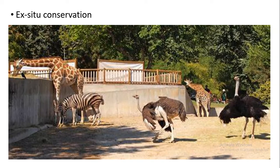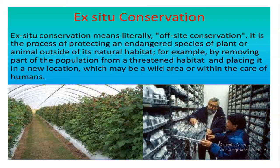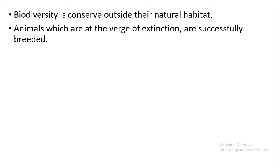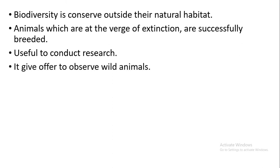Now about ex-situ conservation — here we are protecting animals in an artificial habitat prepared by humans. Ex-situ conservation protects especially endangered animals and endangered plants by moving them from their natural habitat into an artificial habitat so that biodiversity can be conserved. Animals at the verge of extinction are successfully bred and their numbers are increased through ex-situ conservation. It is also a place for research and allows people to observe wild animals.